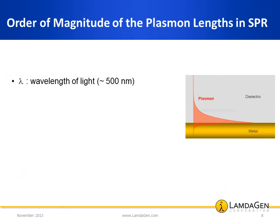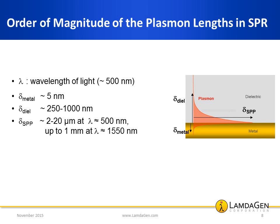Assuming we use an excitation light with a wavelength around 500 nanometers, let's examine the characteristics of the resulting plasmon lengths in SPR using a planar gold surface. The plasmon field in the metal is on the order of a few nanometers, meaning the surface plasmon does not penetrate deep into the metal. Conversely, the evanescent field in the dielectric can extend from 250 nanometers up to a micron into the dielectric, meaning the surface plasmon can sense up to a micron away from the surface. Finally, the surface plasmon propagation length can extend a few microns up to the millimeter scale in very ideal situations.